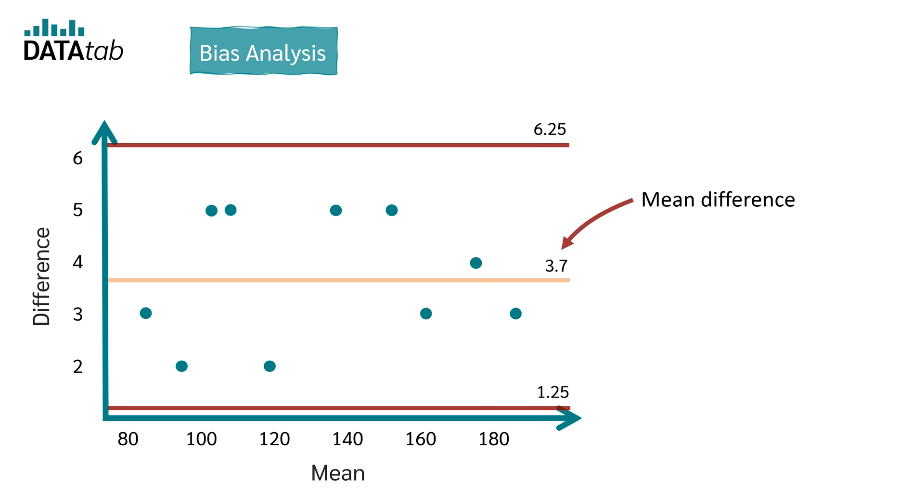Bias analysis. If the mean difference, or bias, is close to zero and most data points are scattered closely around this mean without any specific trend, it suggests that GlucoNew provides readings very similar to GlucoClassic.